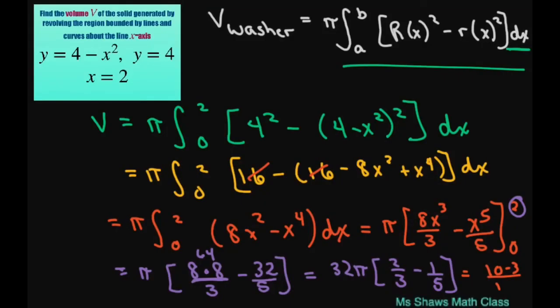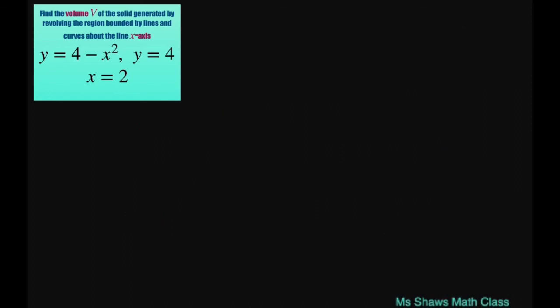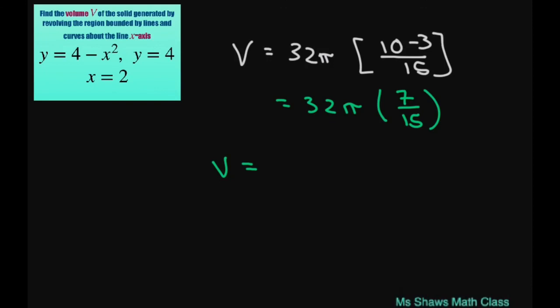Let me do this. We have volume equals 32 pi, and then we'd have 10 minus 3 divided by 15. This gives us 32 pi times 7 divided by 15. And you simplify all this, you're going to get 224 pi divided by 15 units cubed.